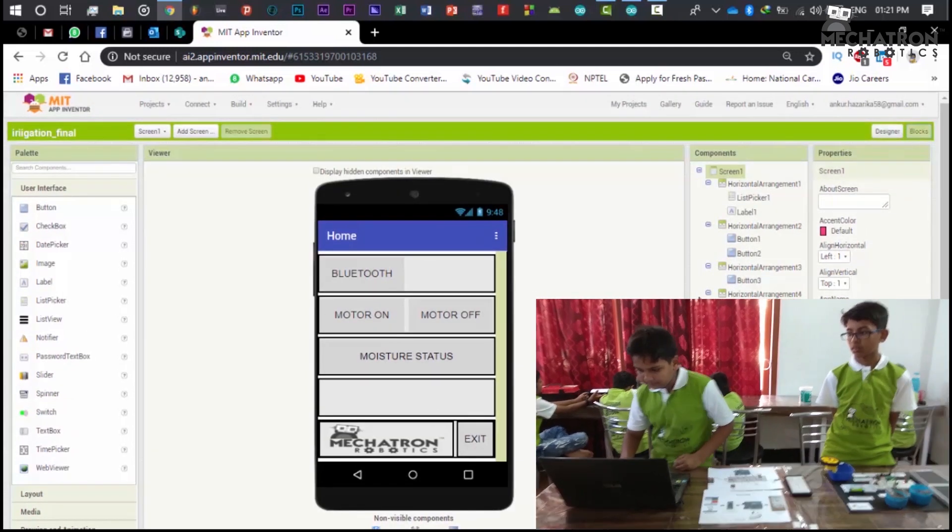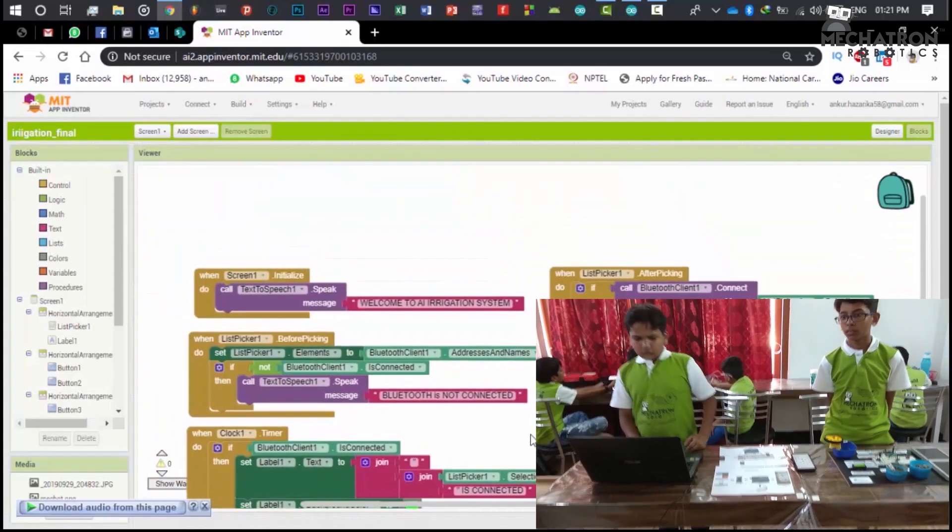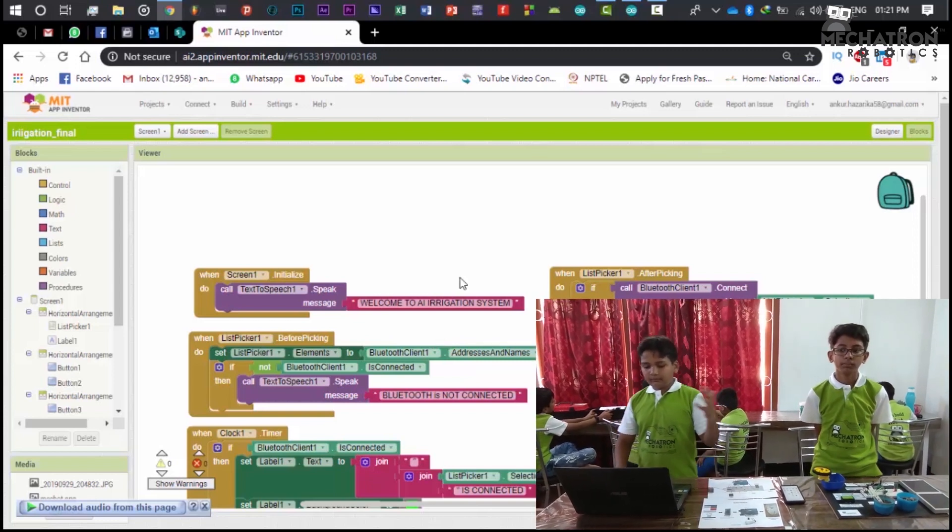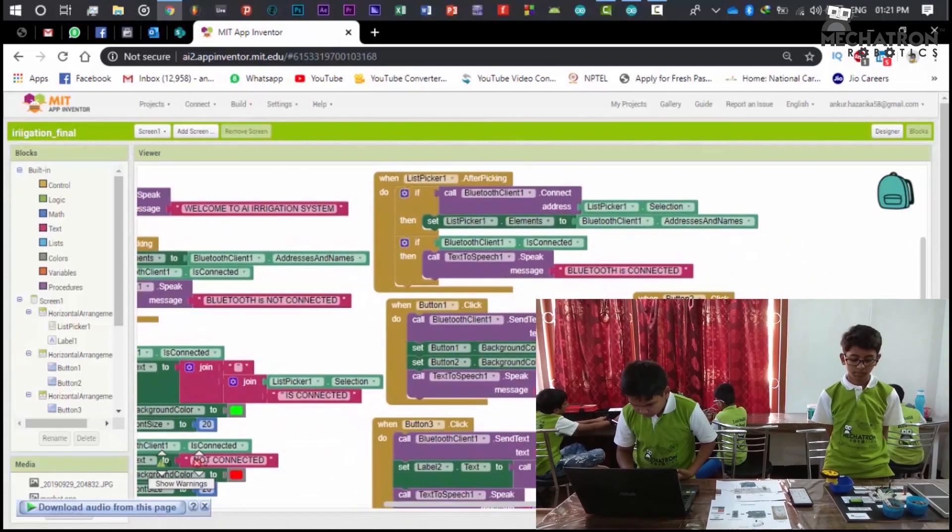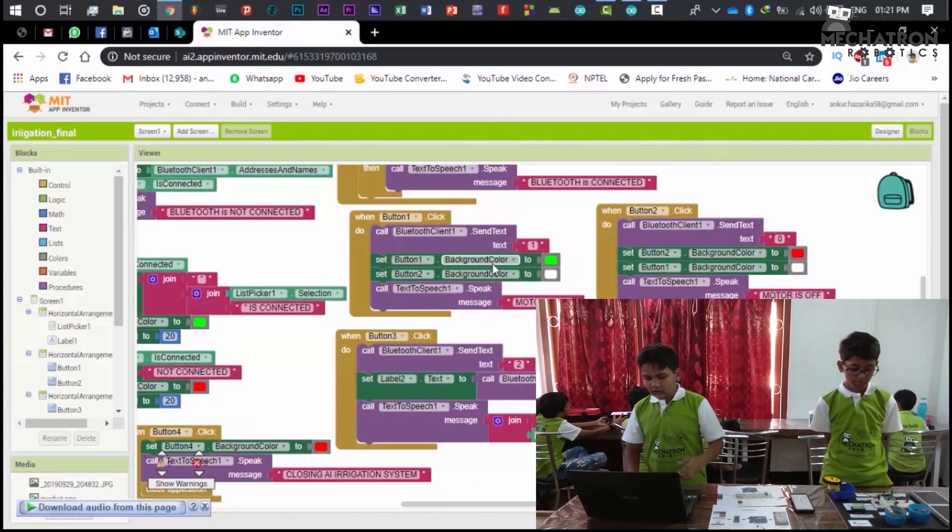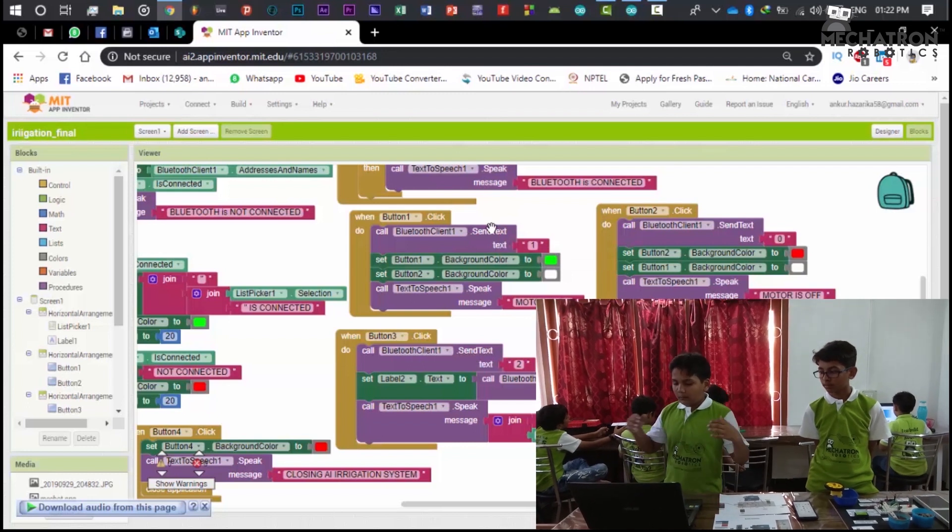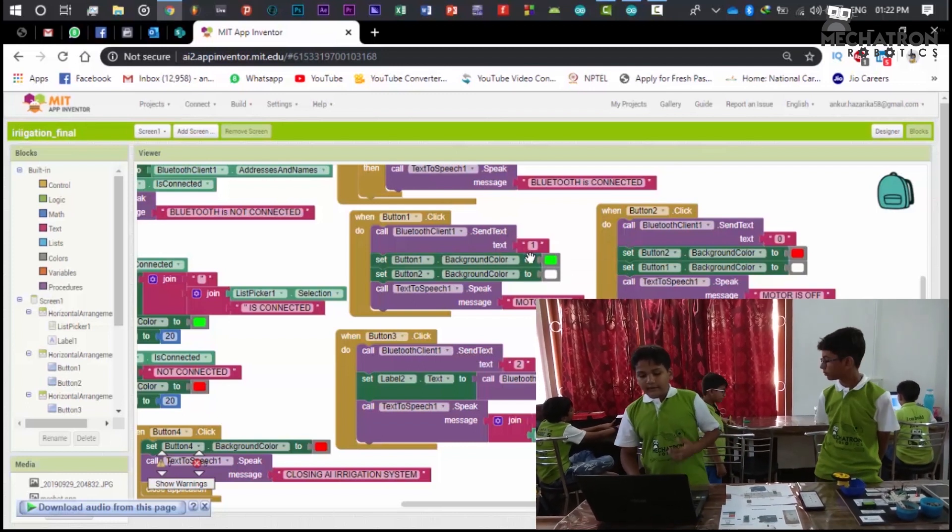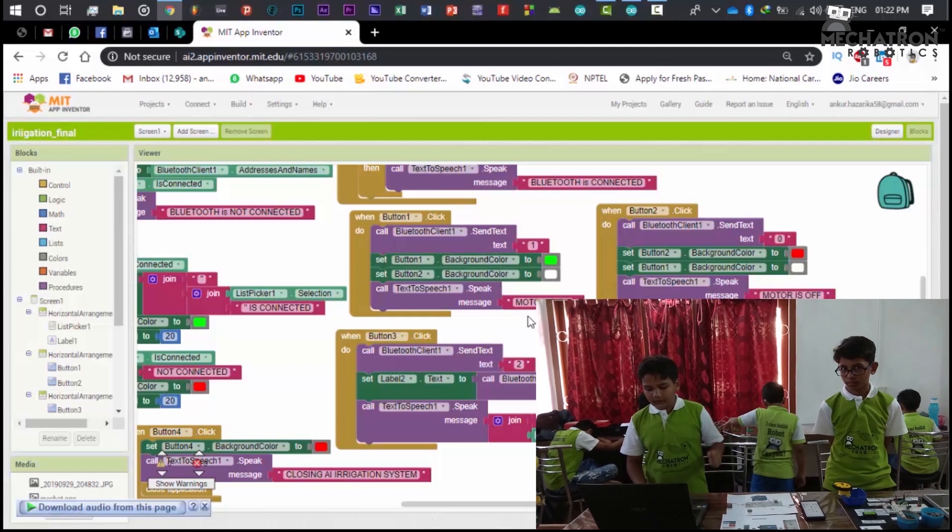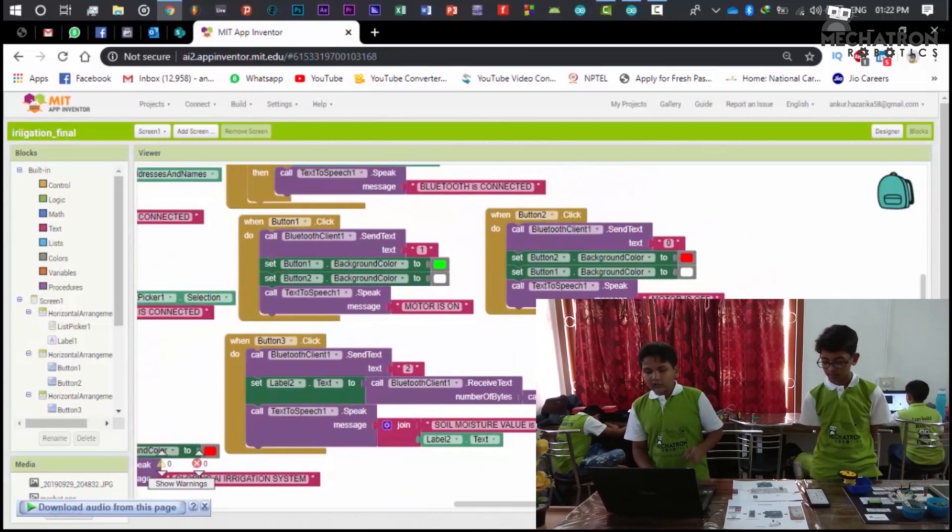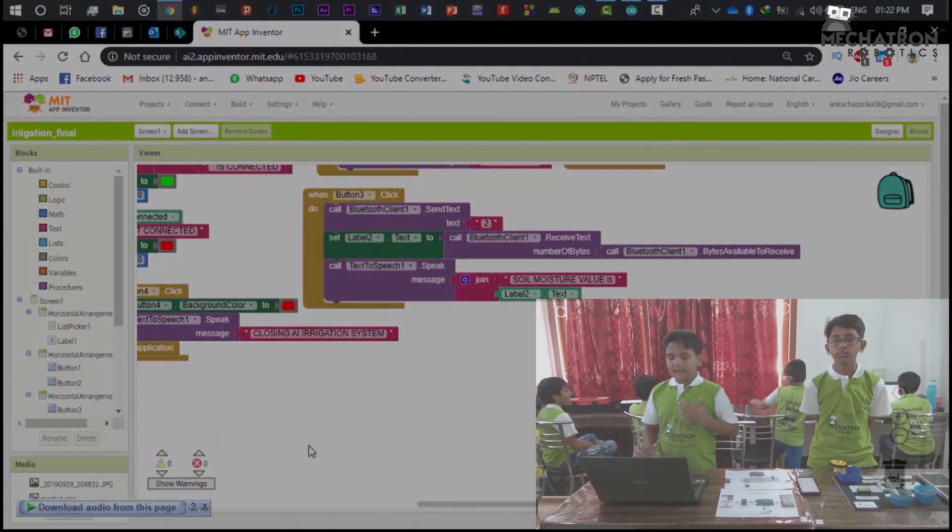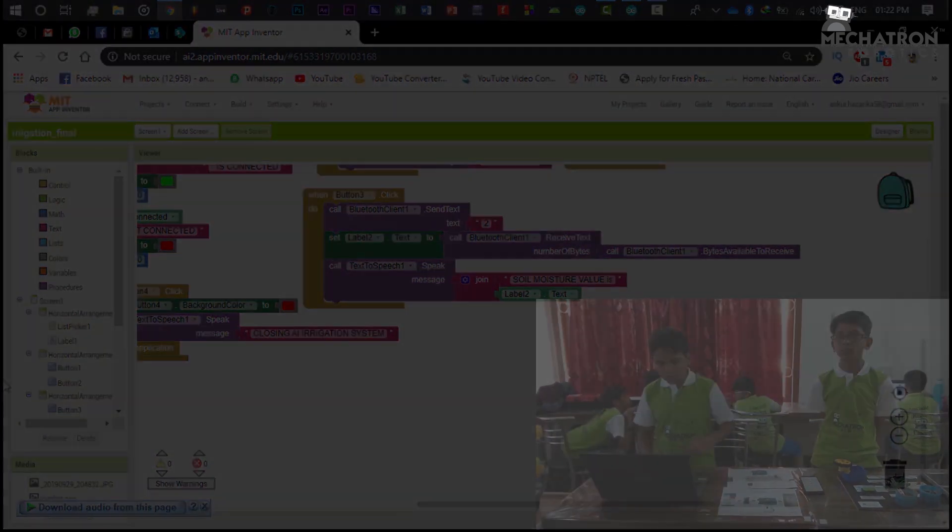Now I will explain the blocks. When we click on the app, it will say welcome to AI irrigation system, and we have put the exit button. If Bluetooth is connected and we click on motor button 1, that is our on button, then it will send Bluetooth 1 and the color would be green. If we click on motor off button, it will send Bluetooth 0. If we click on button 3, it will send X2.